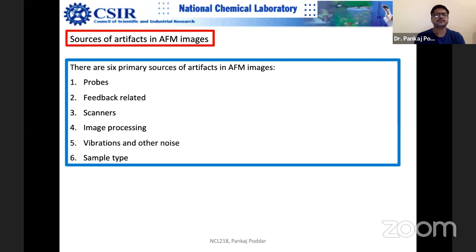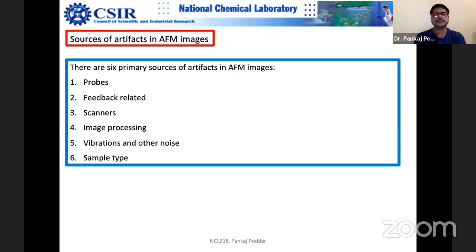Third and quite important is the scanners. Scanners are piezo tubes, and they have their own artifacts and problems. Fourth is image processing. Even if you have captured the image nicely, when you start processing it — doing flattening and other steps — one may introduce a lot of artifacts. The last thing is vibration and other noise. For example, building vibration can be picked up by the instrument and you can see a lot of problems.